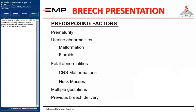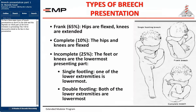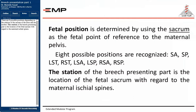Any factor that interferes with the accommodation theory will cause breech presentation. We have three main types of breech presentation depending on which part of the lower extremity is presenting. There are eight possible positions depending on the relation of the sacrum of the fetus to the mother. The station of the breech presenting part is the location of the fetal sacrum with regard to the maternal ischial spines.